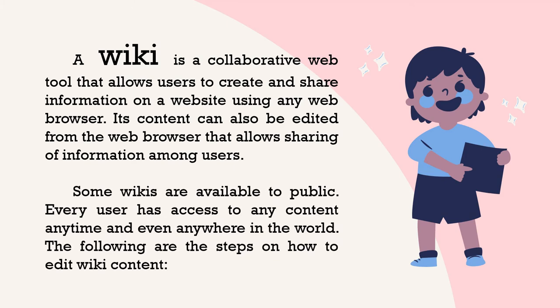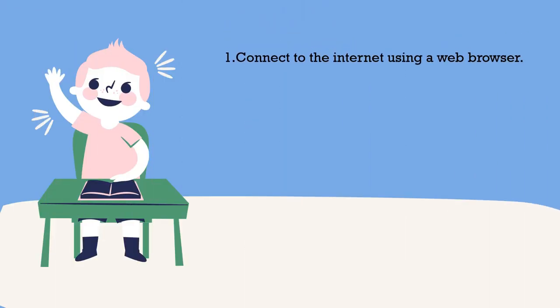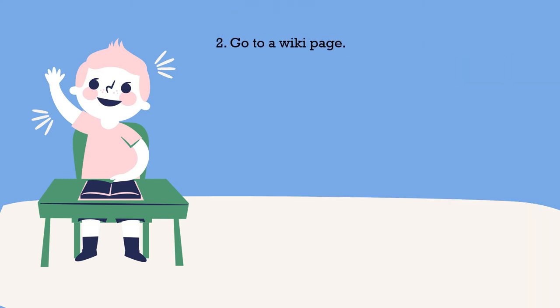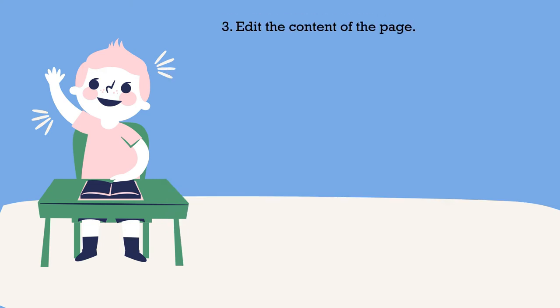Some wikis are available to the public. Every user has access to any content anytime and anywhere in the world. The following are the steps on how to edit wiki content. First, you have to connect to the internet using a web browser. Second, you have to go to a wiki page. Third, you have to edit the content of the page.